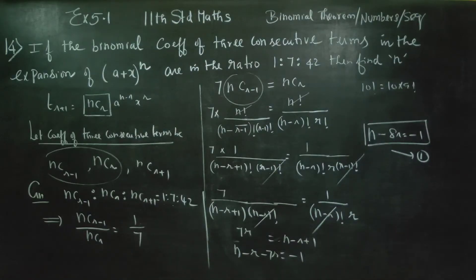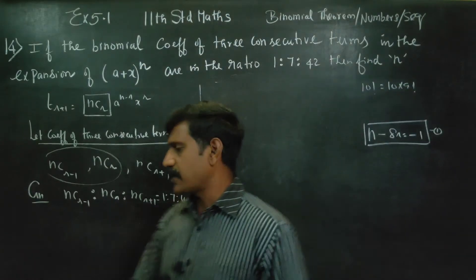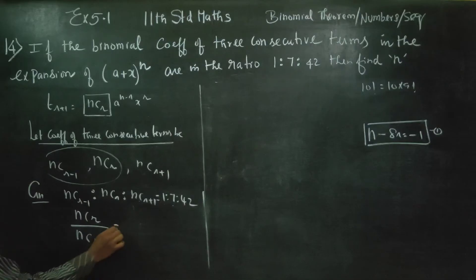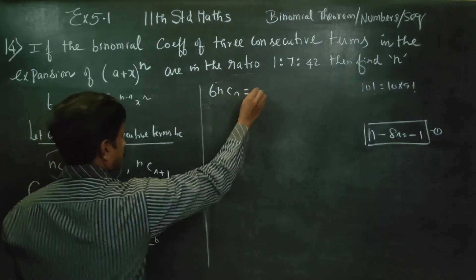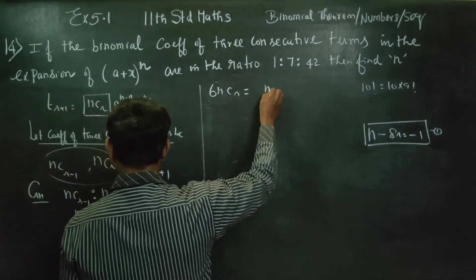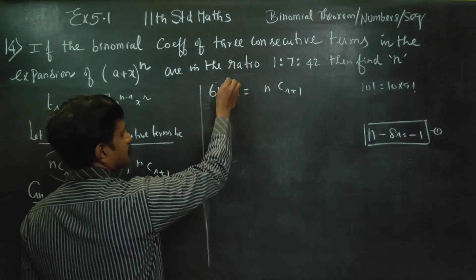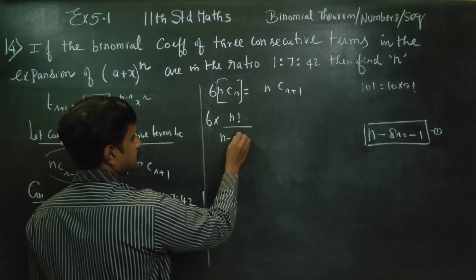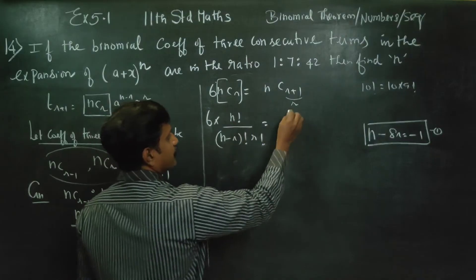Now moving to the second ratio: nCr divided by nC(r+1) equals 7 by 42. Canceling 7, this simplifies to 1 by 6. So 6 times nCr equals nC(r+1). We expand using the nCr formula: n factorial divided by (n minus r) factorial into r factorial.